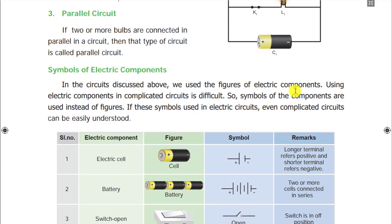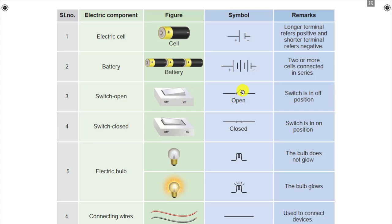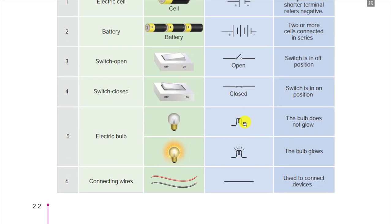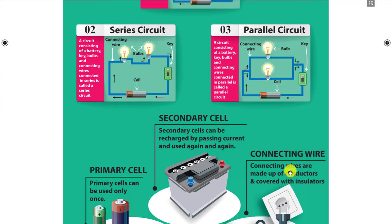Now we see the symbols of electrical components. An electrical cell is shown as a plus and minus symbol. A battery is plus-minus, plus-minus in series — a combination of cells. An open switch means switch-off position; a closed switch means switch-on. A bulb can be shown as glowing or unglowing. Lines represent wires. Using these symbols you can easily draw a simple circuit, series circuit, or parallel circuit. In series, one key controls all bulbs; in parallel, each appliance has its own key.